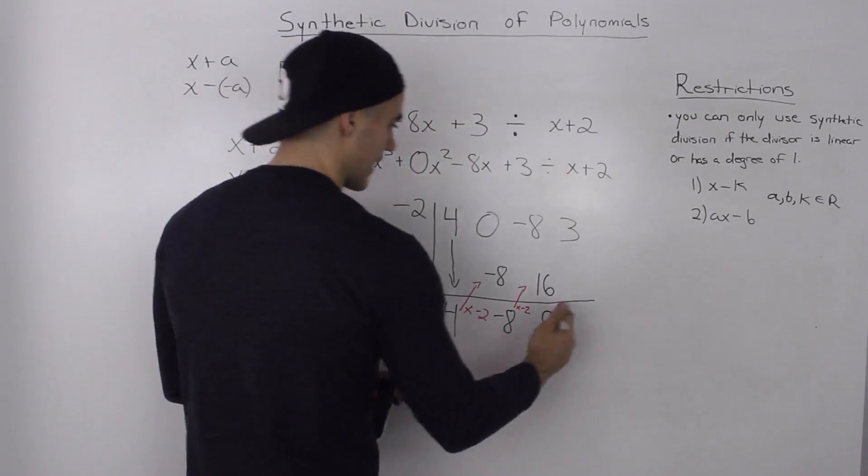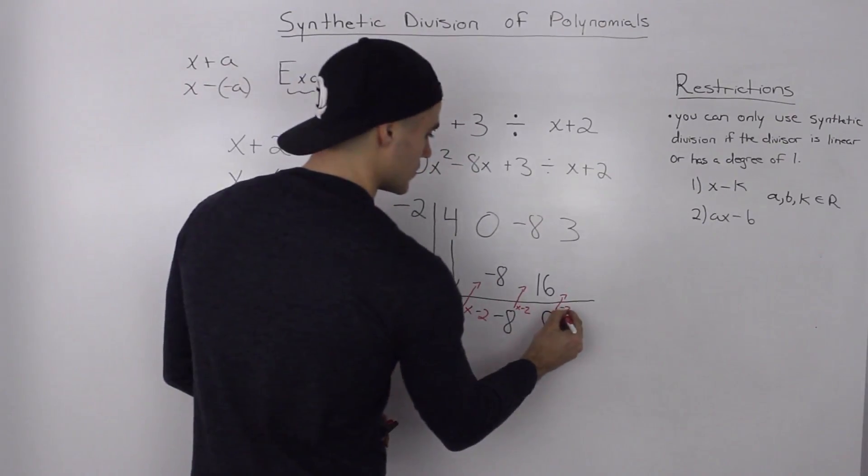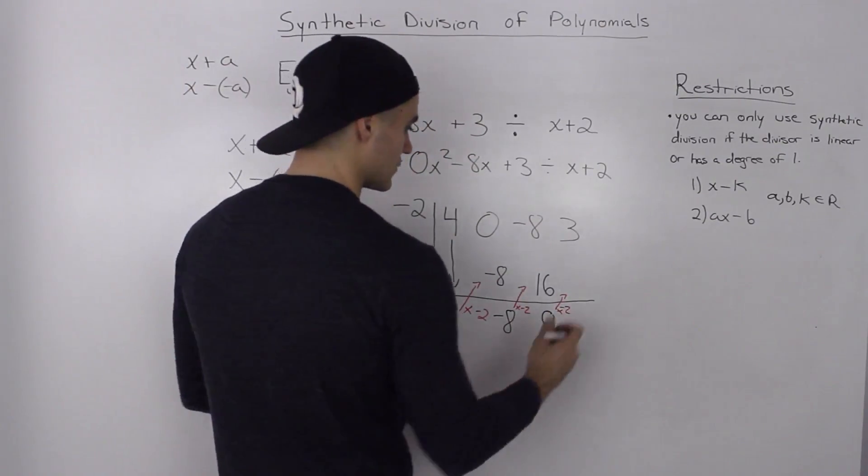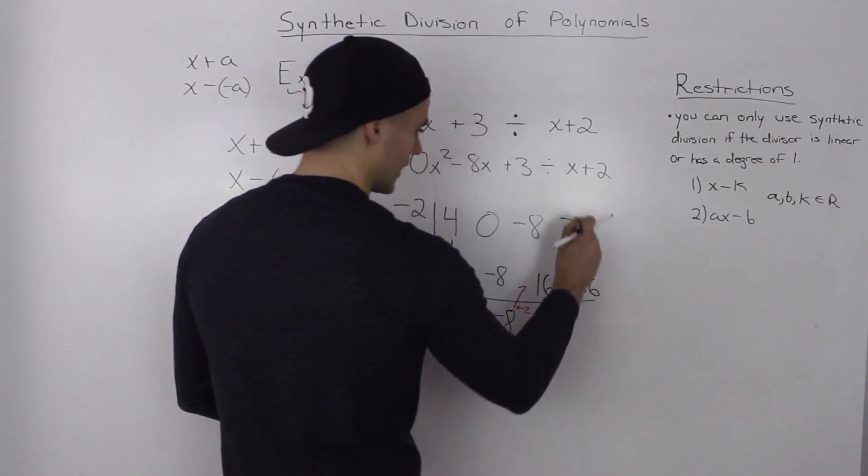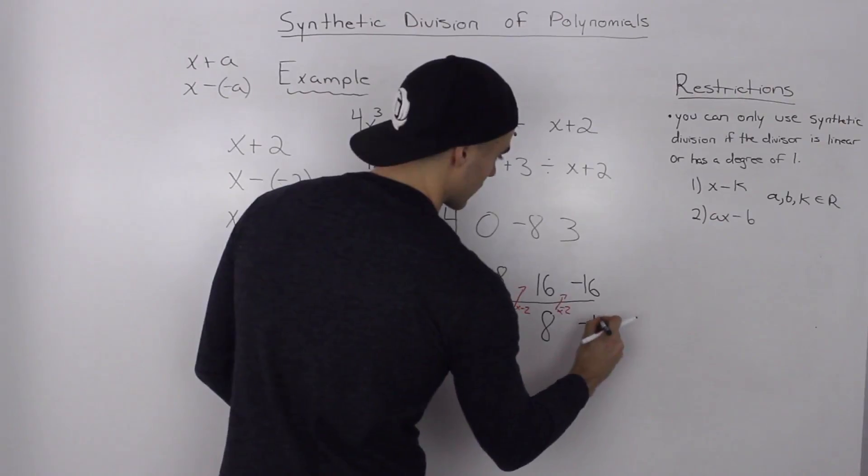Then we take the 8, multiply it by negative 2 again. Our k value of negative 2. So 8 times negative 2 gives us negative 16. And then adding this column here, 3 plus negative 16, that gives us negative 13.